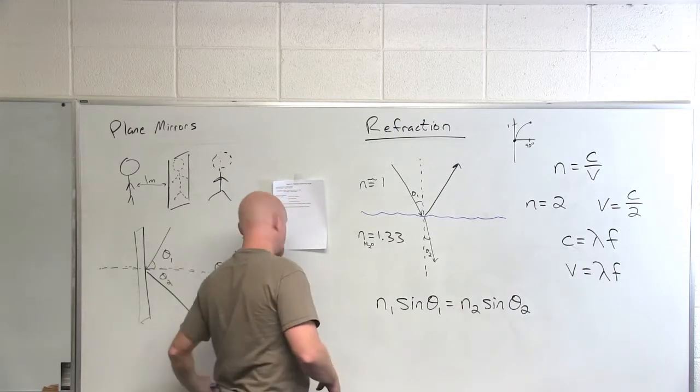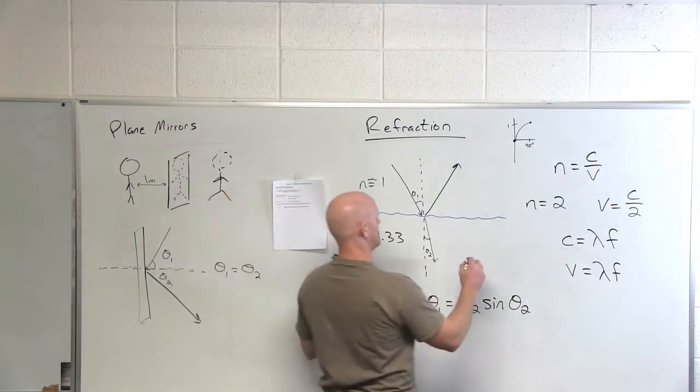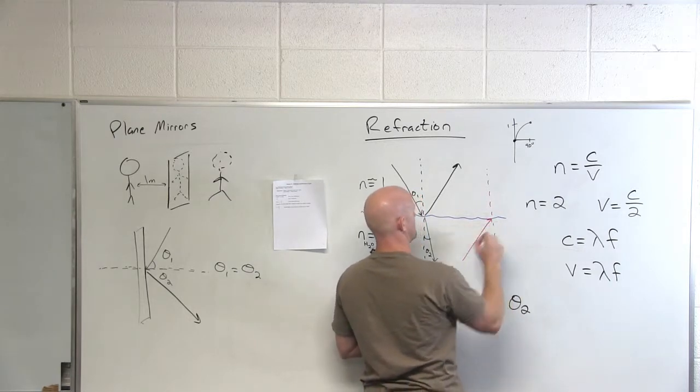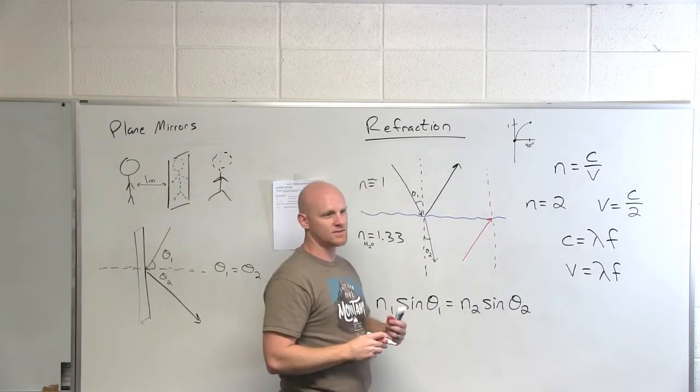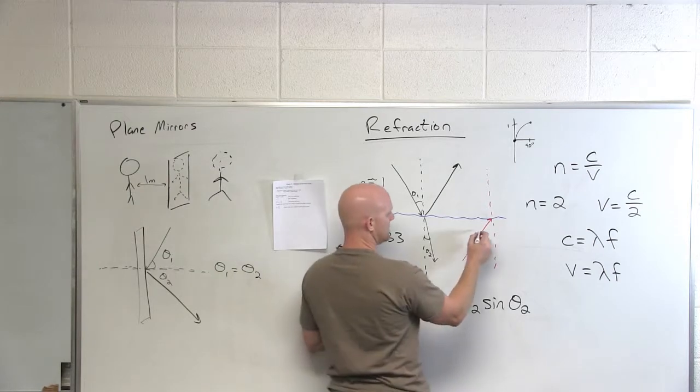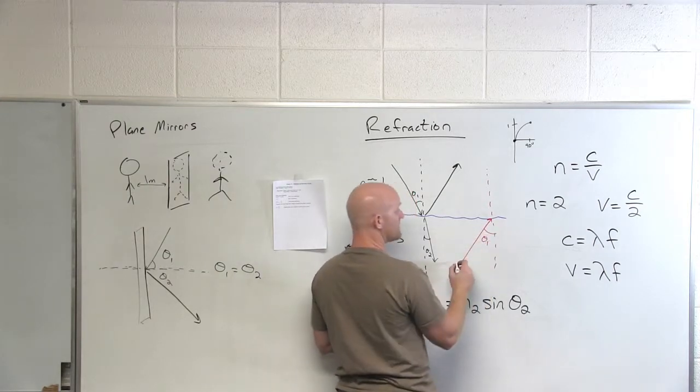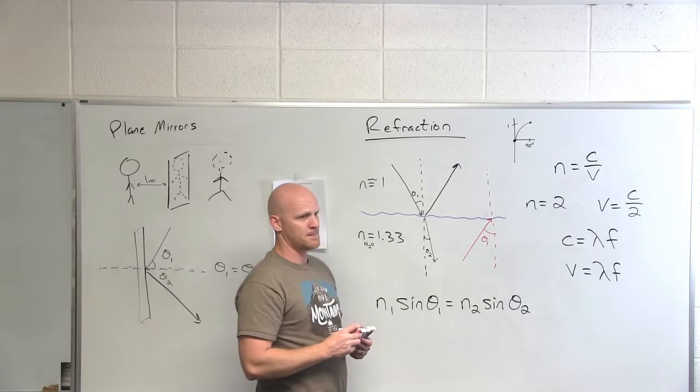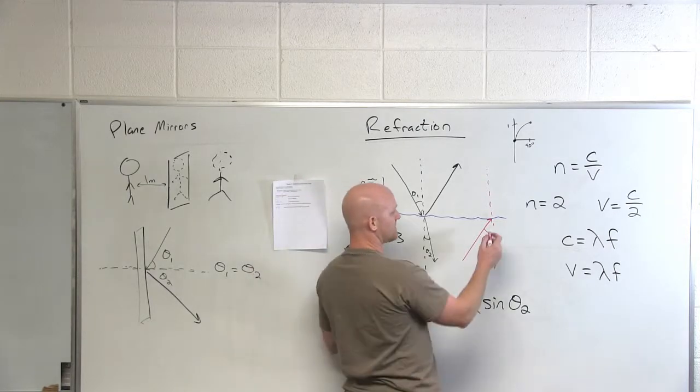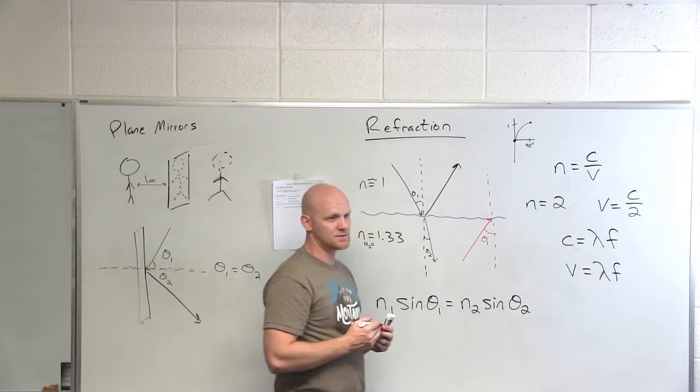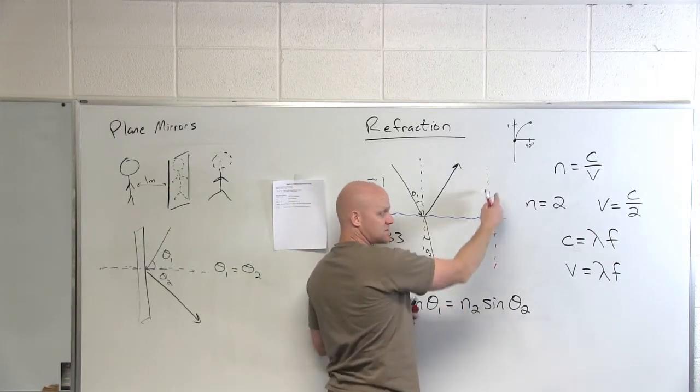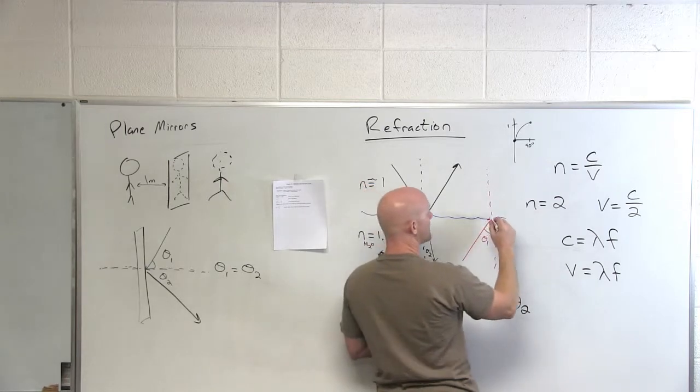What would be true about light exiting at this incident angle here, theta 1, from the water? So say we've got a flashlight underneath the water, and so is it going to bend towards the normal or away from the normal? Yeah. So in this case, we're going from a bigger index to a smaller index, which means we've got to go from a smaller angle to a bigger angle.